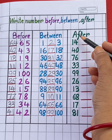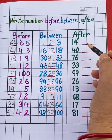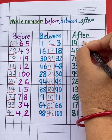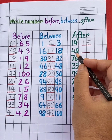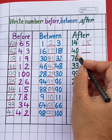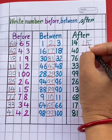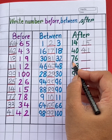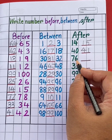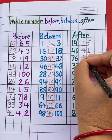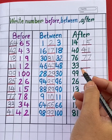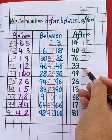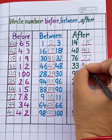Now let's move on to after numbers. 14. Which number will come after 14? Number 15. Next number is 40. Which number will come after 40? Number 41. Next number is 76. Which number will come after 76? Number 77. Next number is 33. Which number will come after 33? Number 34.